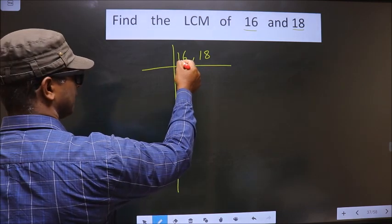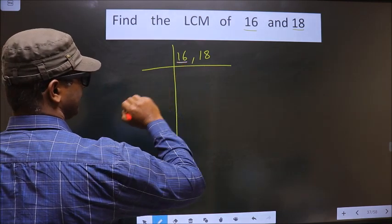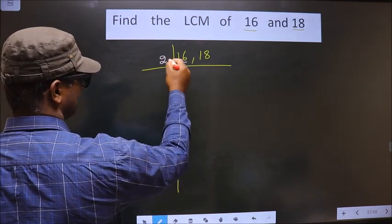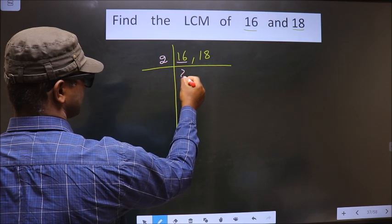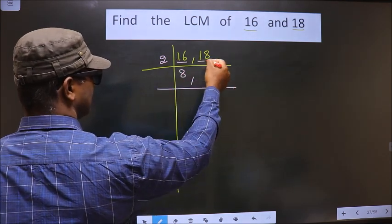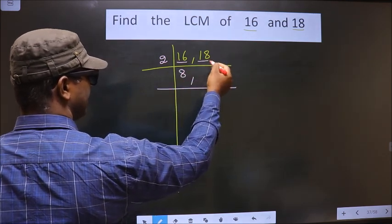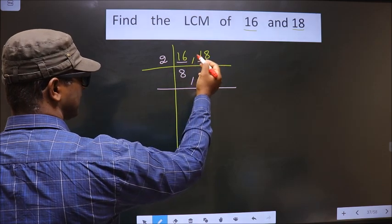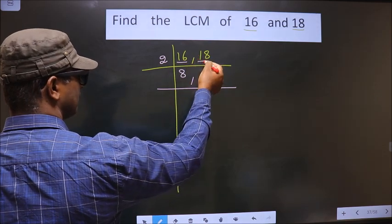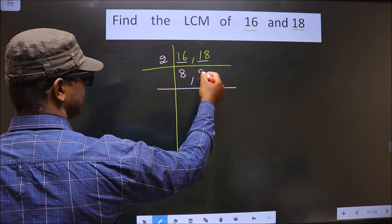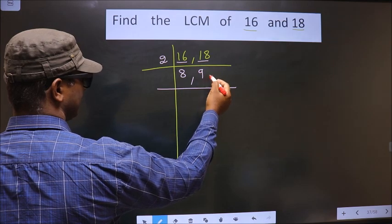Here we have 16. 16 is nothing but 2 eights, 16. Next number is 18. Even 18 is also divisible by 2. When do we get 18 in the 2 table? 2 nines, 18.